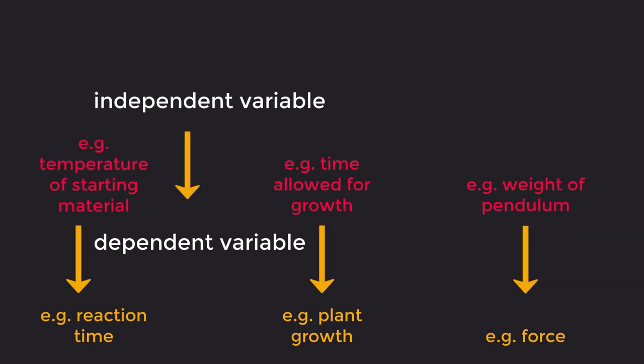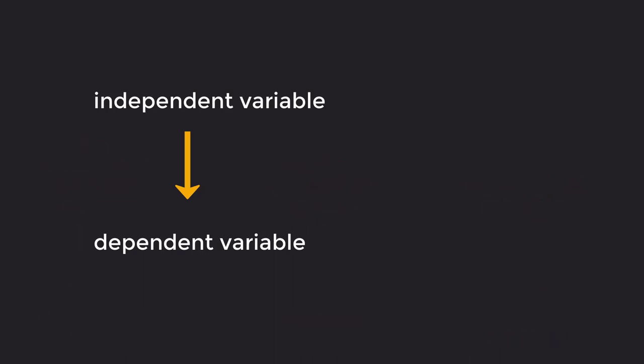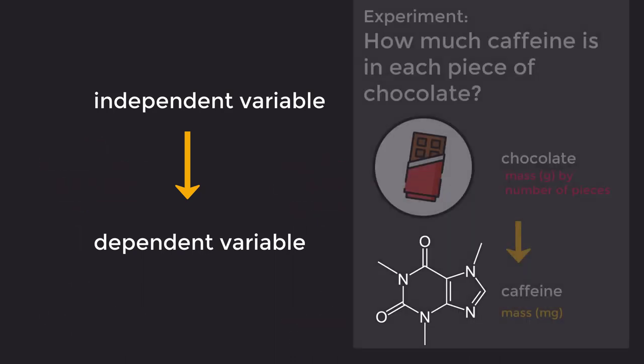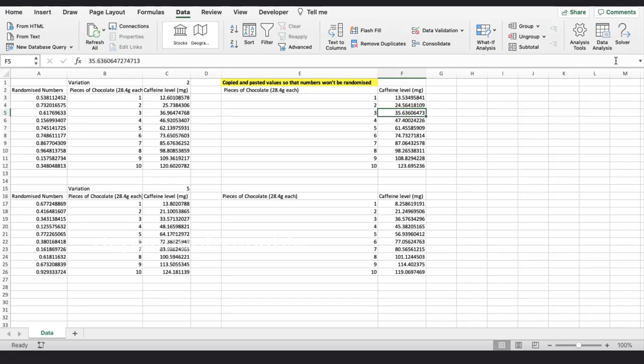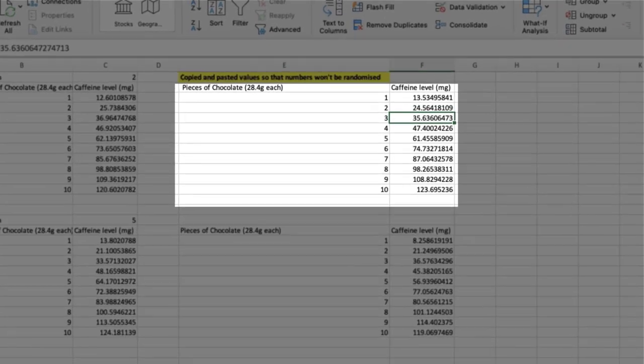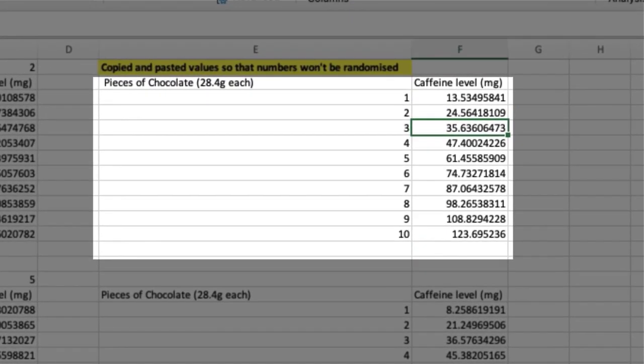To look at this relationship more carefully, let's take an example. Suppose we did an experiment to find out the amount of caffeine content in chocolates. Say I did this test and gathered the following data. Perhaps you can see a general trend in the table of data. Caffeine level does go up with pieces of chocolate, but it's not smooth. We can see that better if we graph it.